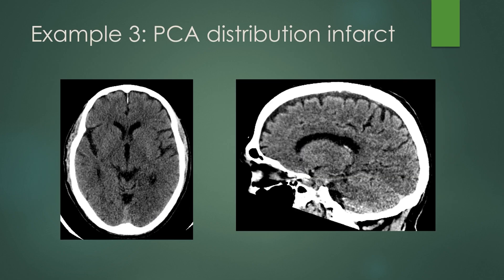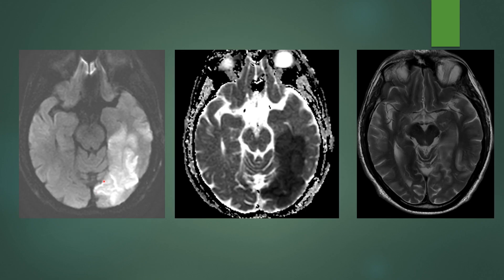Example three is a PCA distribution infarct. On CT, you see subtle low attenuation involving the left occipital lobe extending to the mesial left temporal lobe. On the sagittal view, subtle low attenuation involving the cortex of the left occipital lobe compared to the normal bright cortex superior to the infarct. On MRI, there is restricted diffusion involving the left occipital lobe extending to the left mesial temporal lobe, with low ADC signal and hyperintense T2 signal — actually brighter in the mesial temporal lobe than in the occipital component.